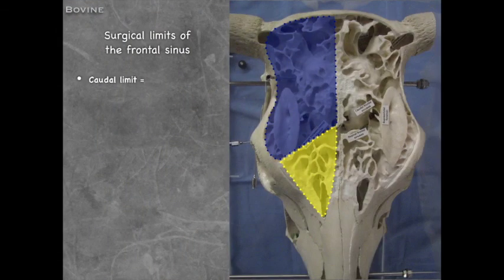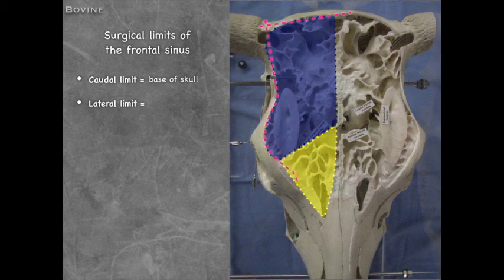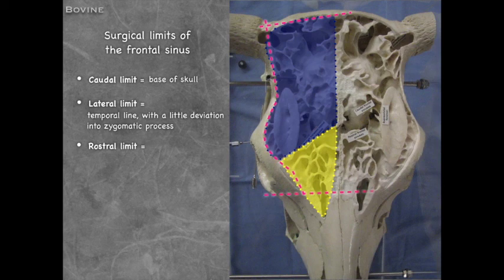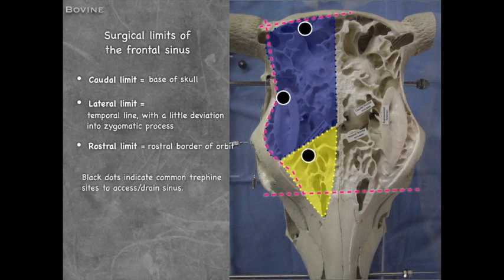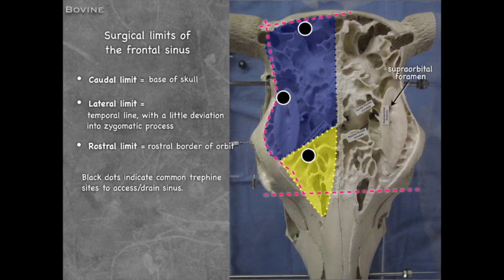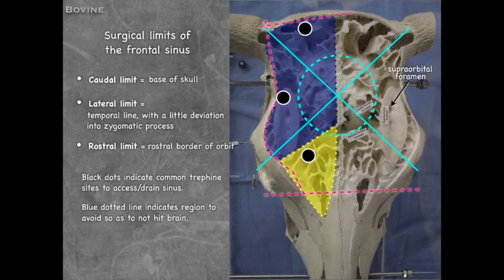The surgical limits of the frontal sinus: the caudal limit is the base of the skull; the lateral limit is approximately the temporal line with a slight deviation into the zygomatic process; the rostral limit is the rostral border of the orbit. Trefining — drilling through the skull into the sinus for drainage — must avoid the supraorbital foramen and the vein, and must not get too close to the center to avoid the brain.